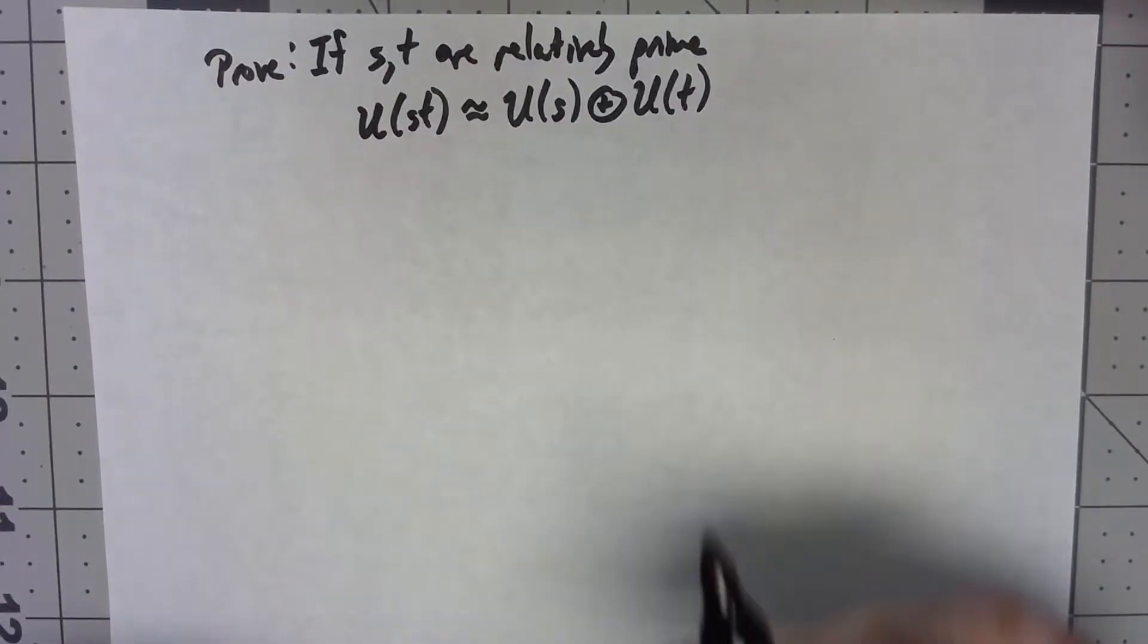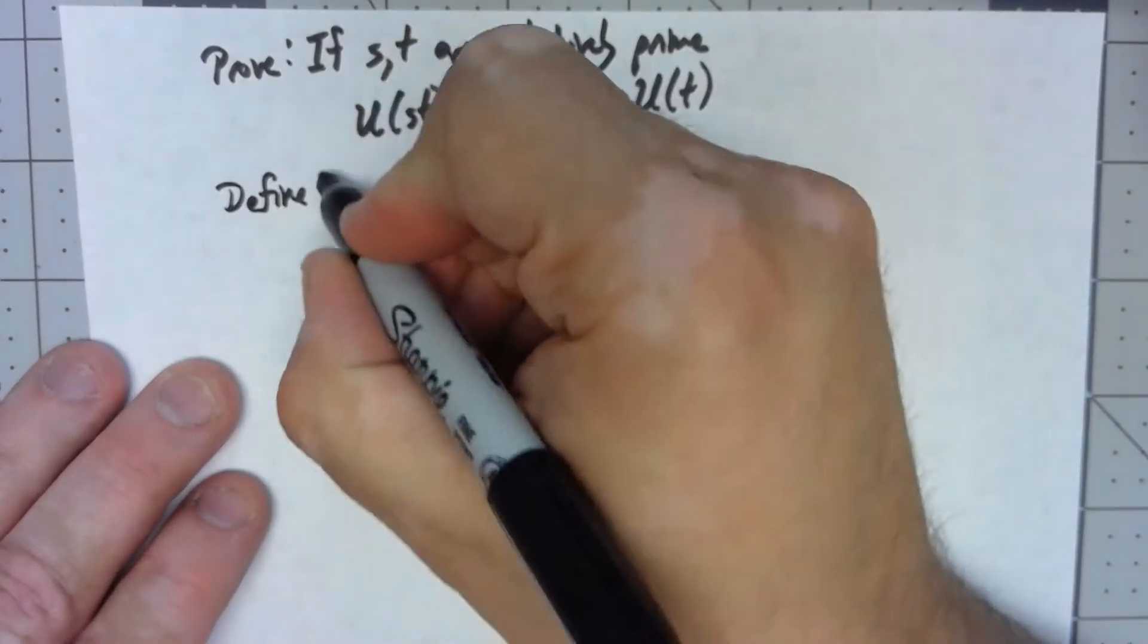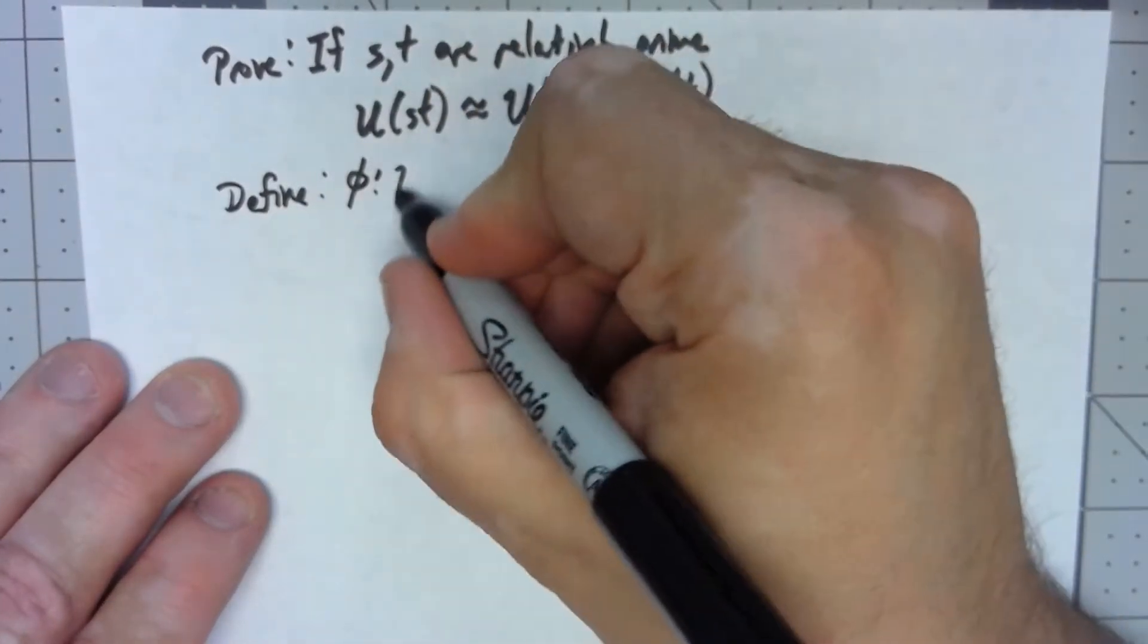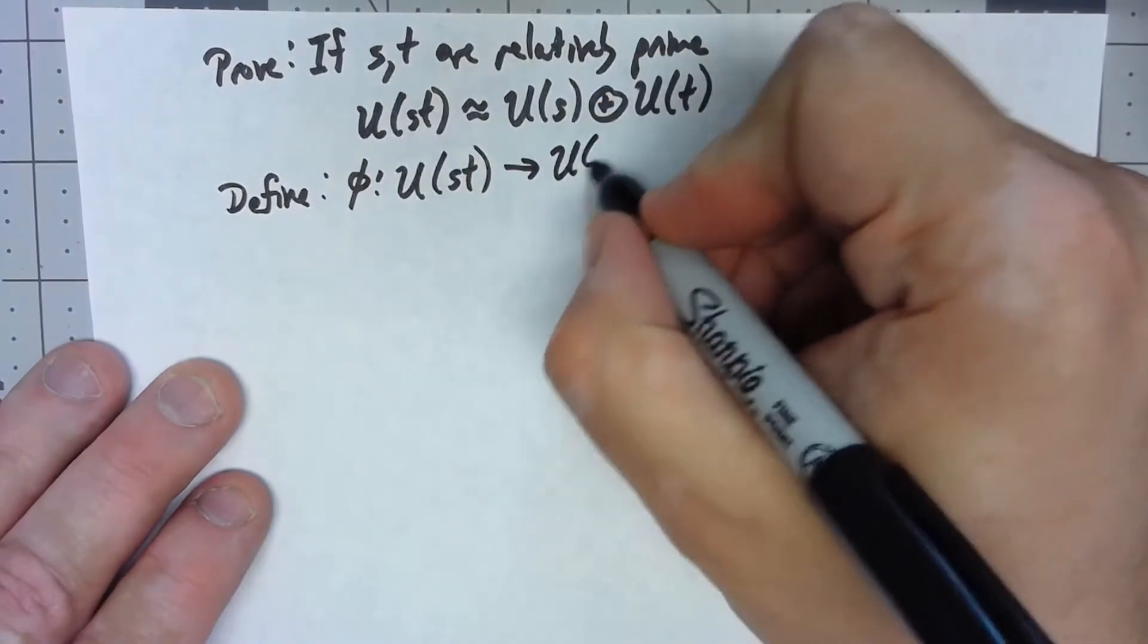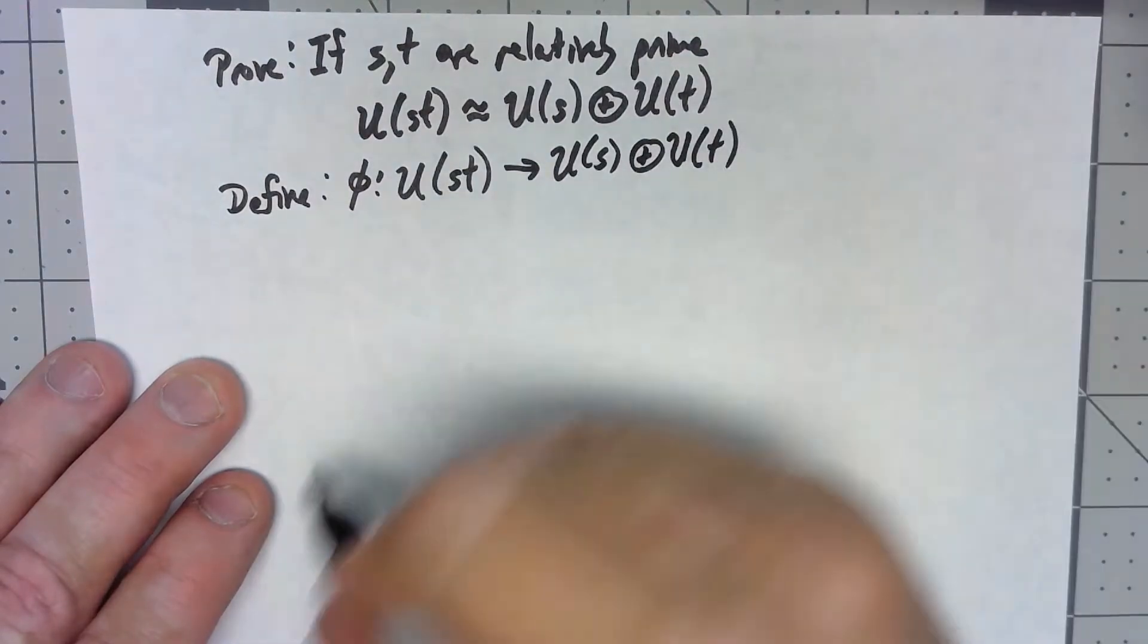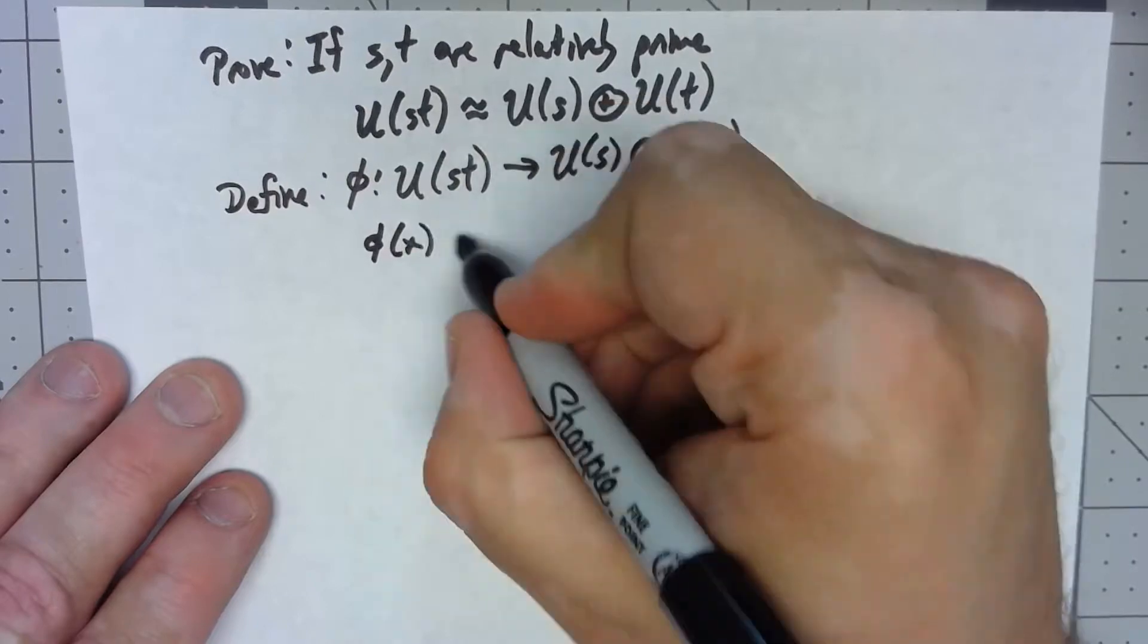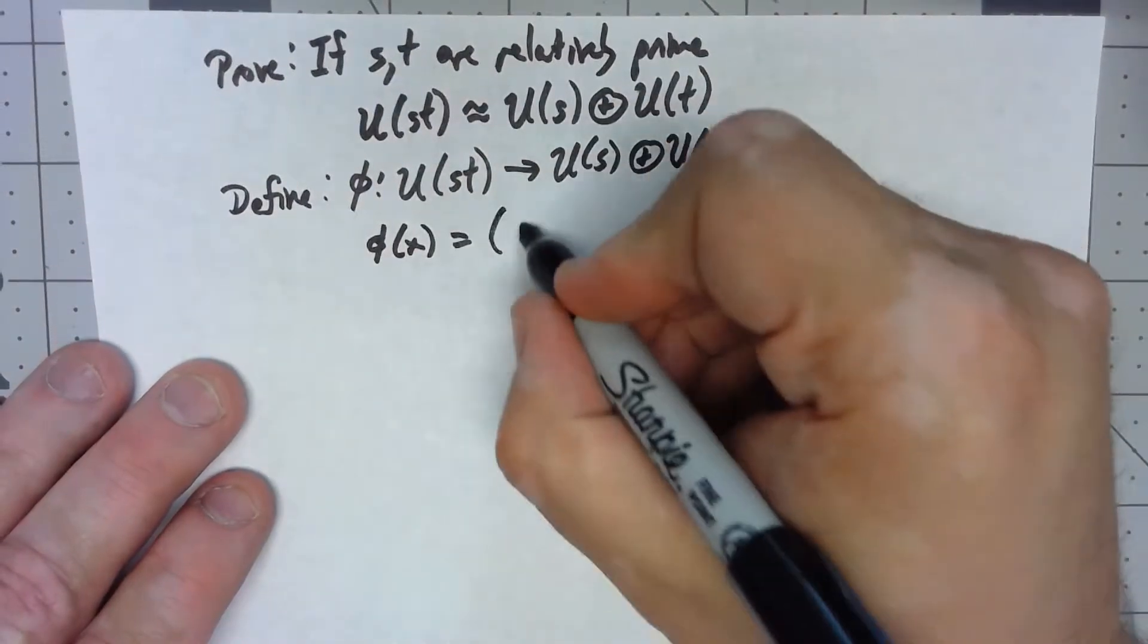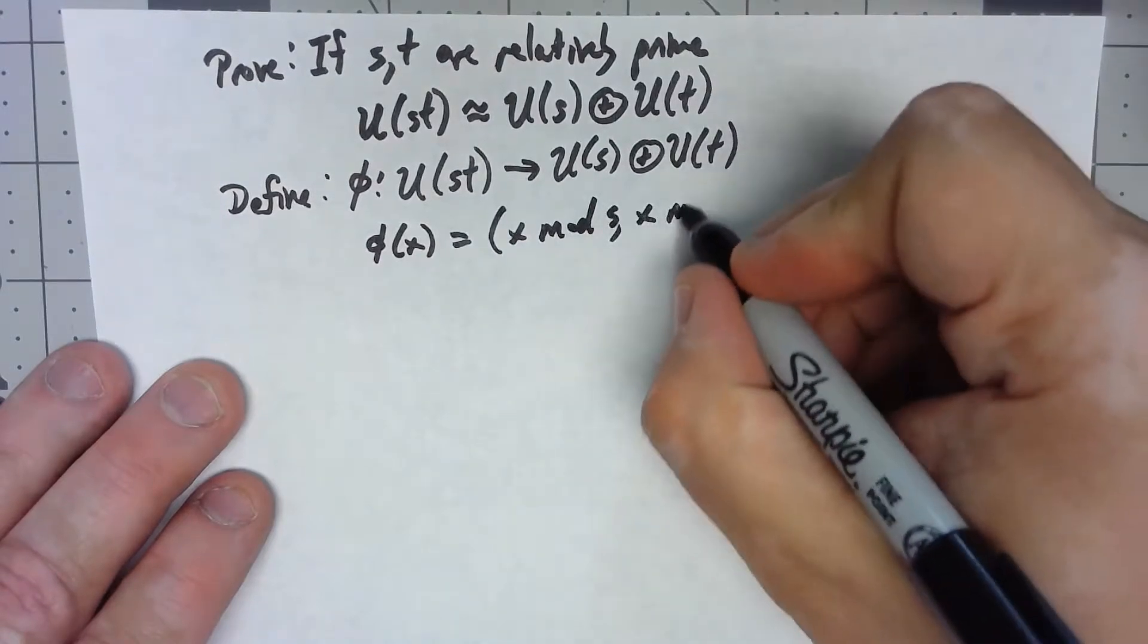So we're going to define an isomorphism here. We're going to define a phi going from U(st) to U(s) direct product U(t) by phi of x is equal to (x mod s, x mod t).